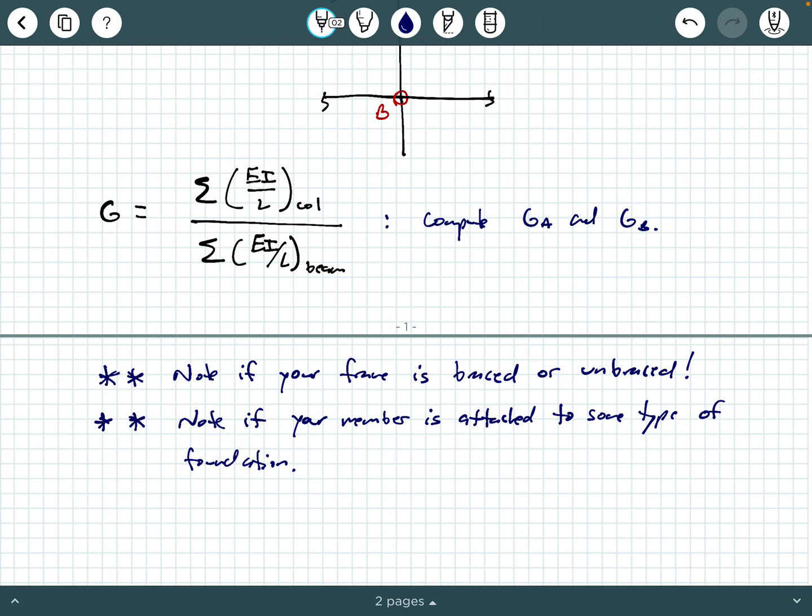So I'm going to quickly read this little segment in the steel manual. It says for column ends supported by, but not rigidly connected to a footing or foundation, G is theoretically infinity, but may be taken as 10. If the column is rigidly attached to a footing, G may be taken as one. So be very careful if you have like a first floor column attached to some kind of foundation.